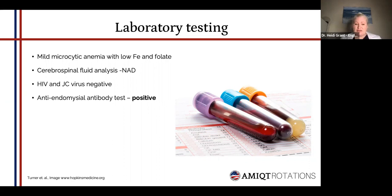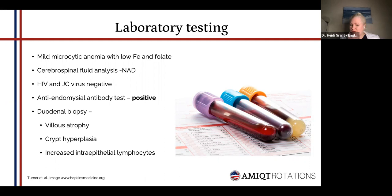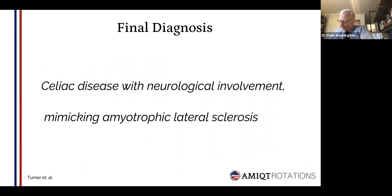The anti-endomysial antibody test is a test for celiac disease. Because of that positive result, a duodenal biopsy was done showing villous atrophy, crypt hyperplasia, and increased intra-epithelial lymphocytes — our classic triad of gluten enteropathy. So the final diagnosis became celiac disease with neurological involvement, mimicking amyotrophic lateral sclerosis.